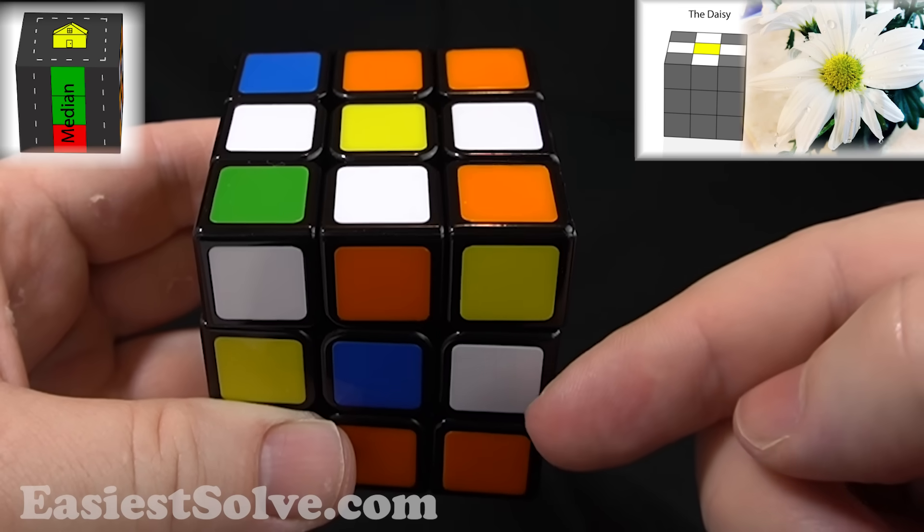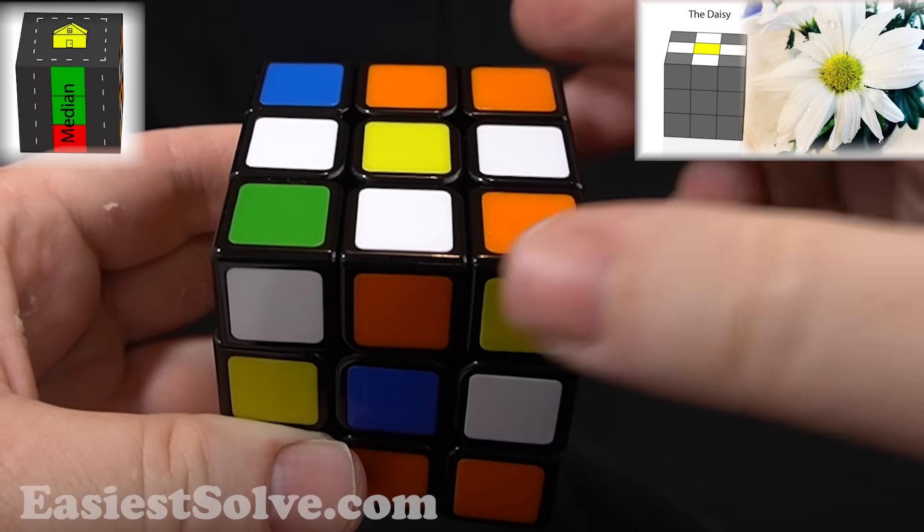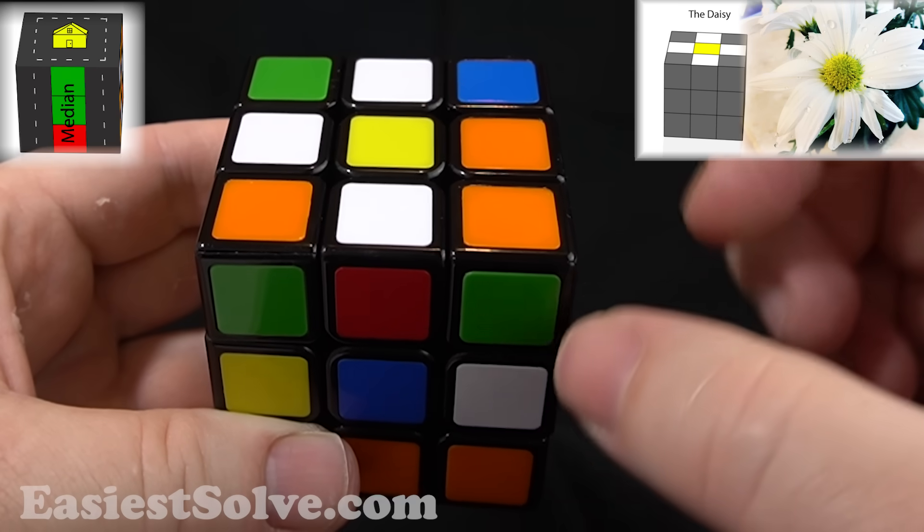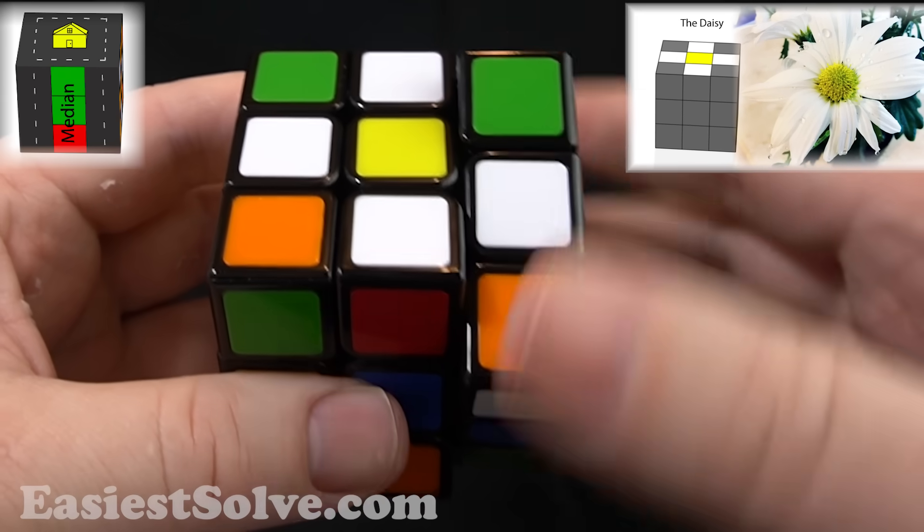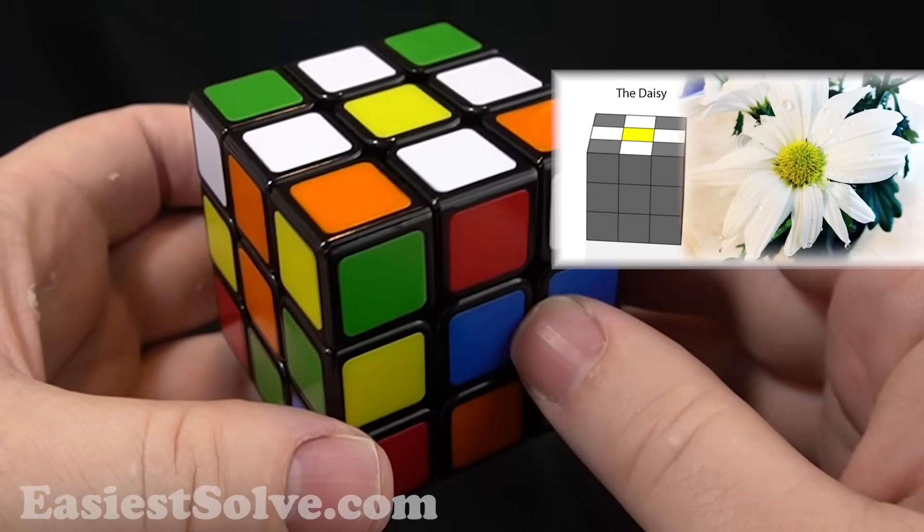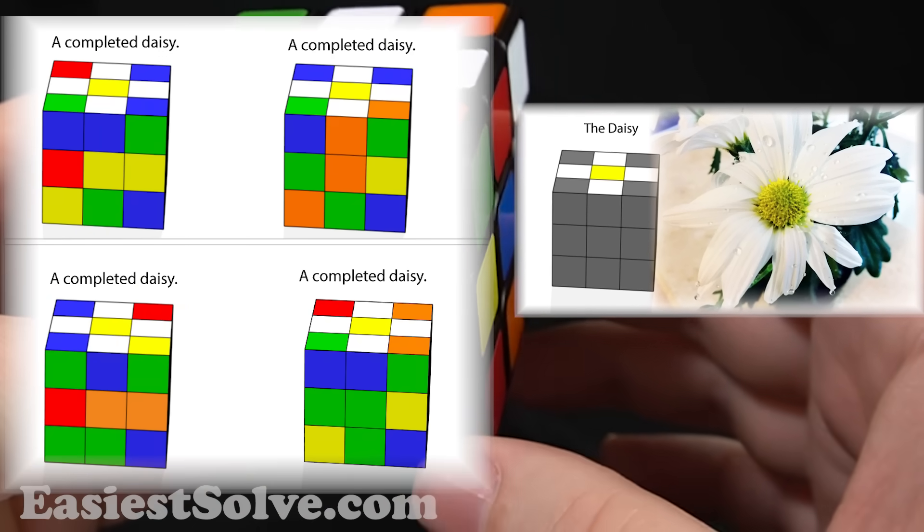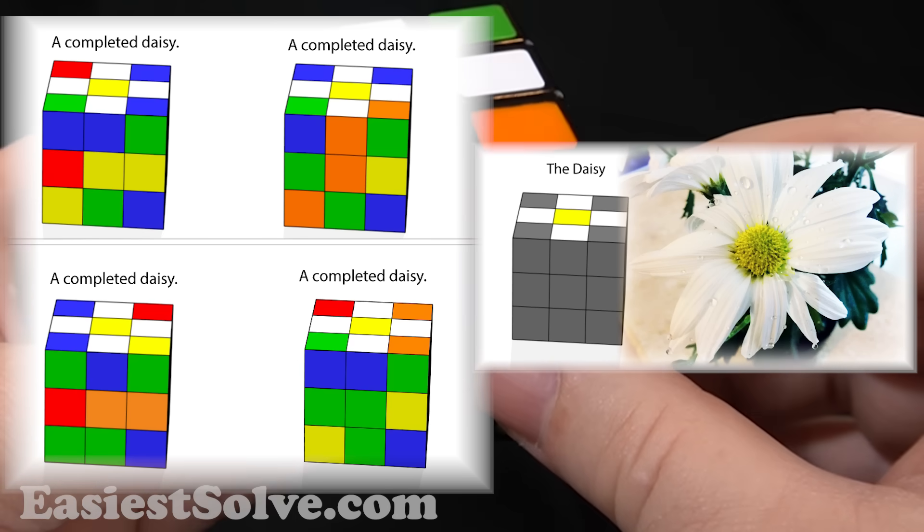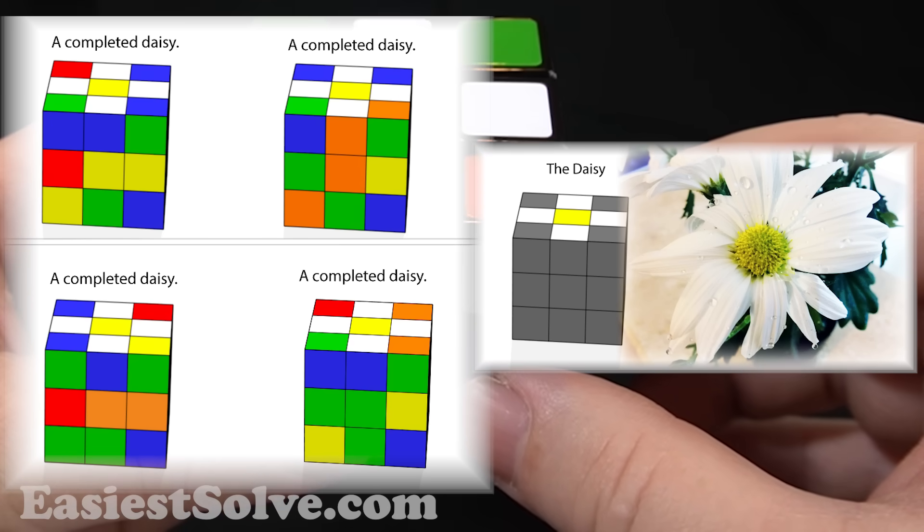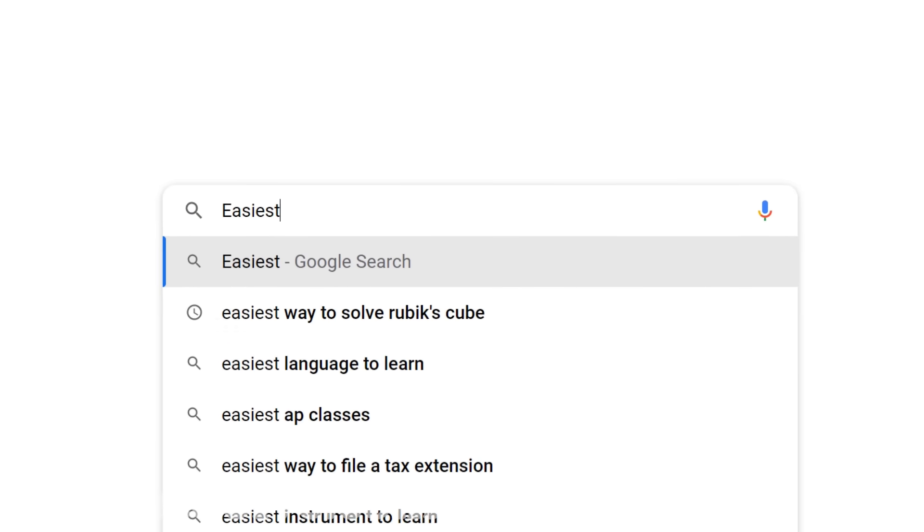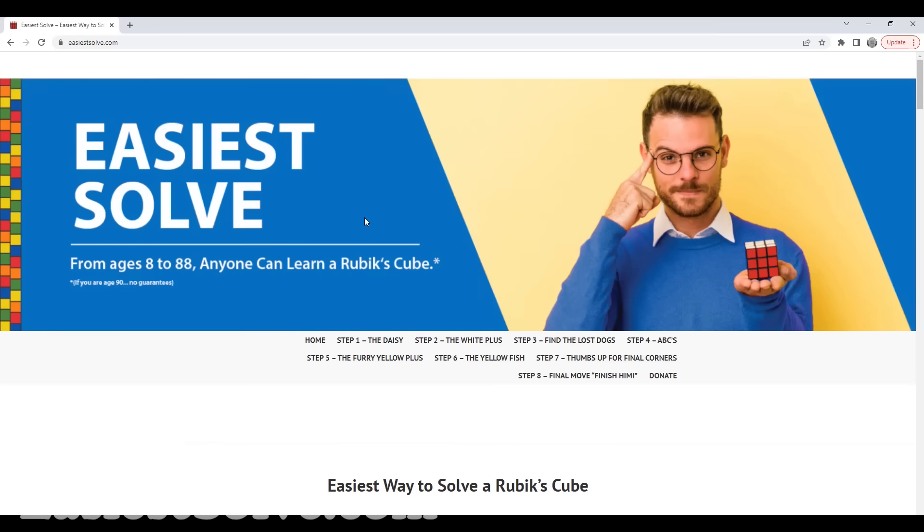If I brought this up, it crashed into this car. Then we say, oh, here's the free spot. We just drive him up into that location. And this is called the daisy. Once you solve the daisy, you've completed this step. If you can go from a scrambled cube to the daisy in under one minute, then you're ready for step two. You just go to easiestsolve.com and click on step two.